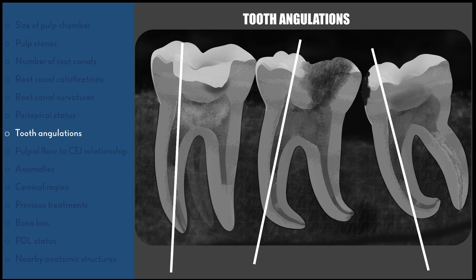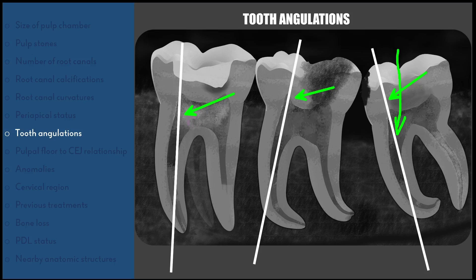Often neglected but very important is noticing tooth angulations in the radiograph. If you see the angulation of the root canal from the location where we access it from the coronal region, each tooth has a different inclination. Whenever the root canal is straight in the coronal one-third, root canal treatment can be fairly simple and easy. Whenever the straight angulation is tilted or deviated from a straight line, it is going to be quite complicated. If you see the third molar which is tilted mesially and you access this root canal from a straight angulation, it will often lead to instrument separation. So root and tooth angulation should always be taken into consideration.